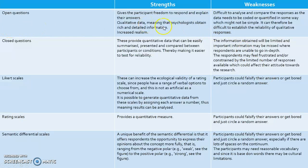For open questions, these give participants freedom to respond and explain their answers. They give qualitative data, meaning the psychologist can obtain rich and detailed information, and this gives increased realism. However, they are difficult to analyse and compare, as the data needs to be coded or quantified in some way which might not be simple. It can therefore be difficult to establish the reliability of qualitative responses.